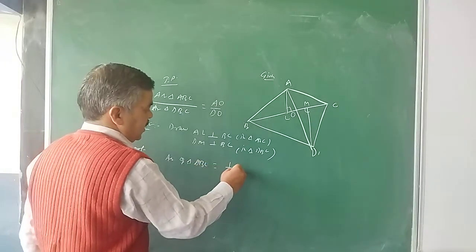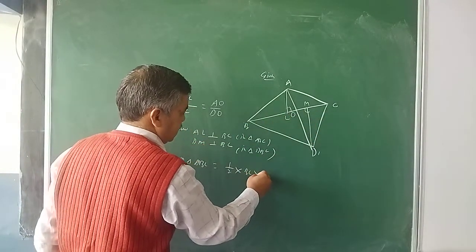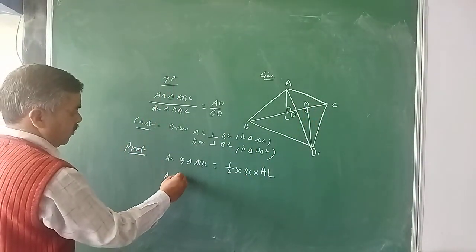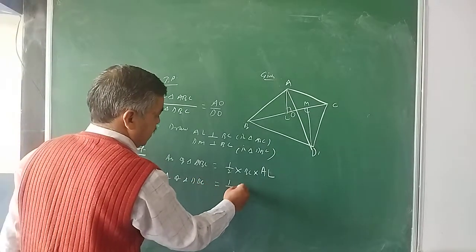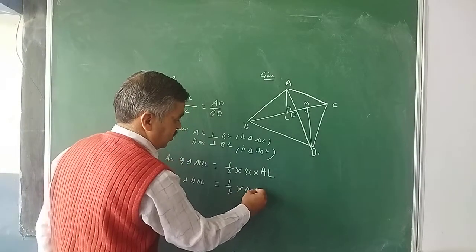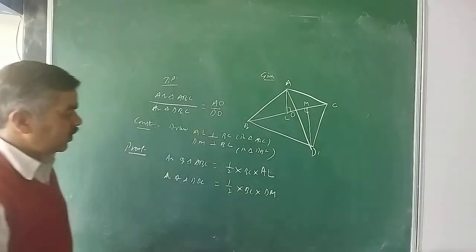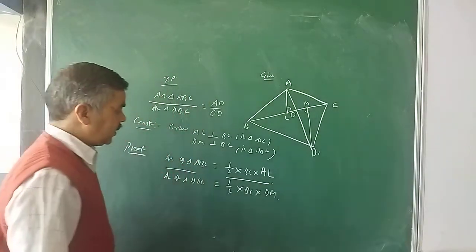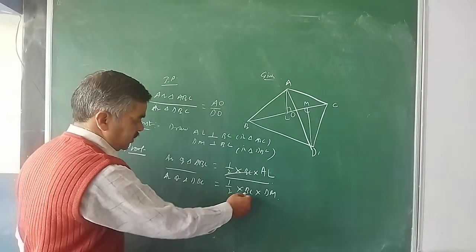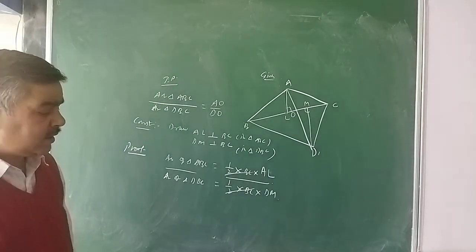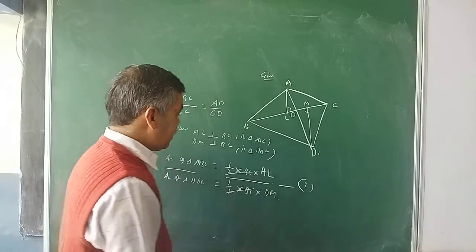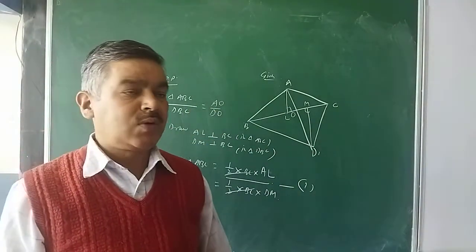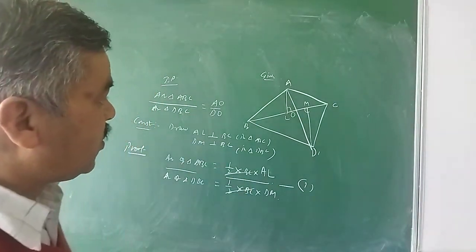So now I have to see whether I can prove AO upon DO is equal to AL upon DM. Consider triangles AOL and DOM. Angle 1 is equal to angle 2 — vertically opposite angles. Angle ALO and angle DMO are right angles — 90 degrees each, since AL and DM are perpendicular to BC. Therefore triangle AOL is similar to triangle DOM by AA criterion.